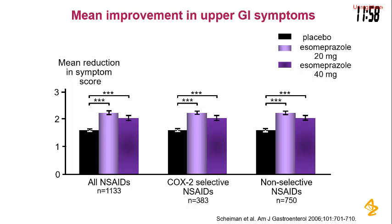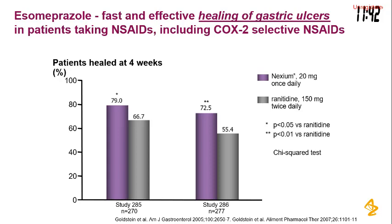The mean improvement in upper GI symptoms was also very clear: patients who took esomeprazole had much less GI symptoms than those who did not take esomeprazole. Another study examined the effect of esomeprazole for healing of gastric ulcers.